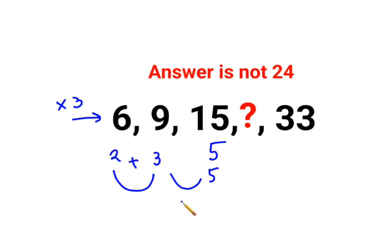So 5 plus 3 the answer should be 8 but they have already clearly said that the answer is not 24. So now in this case what do we do? Let's just remove this logic as of now and let's concentrate on what happens over here.